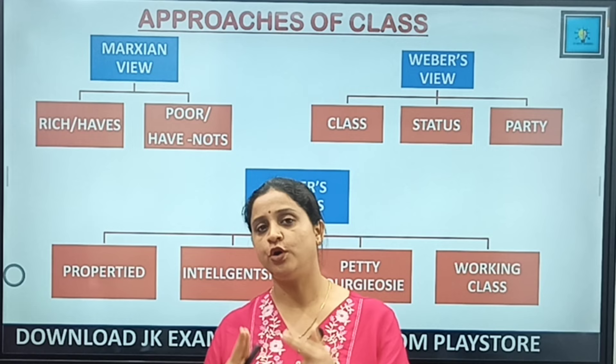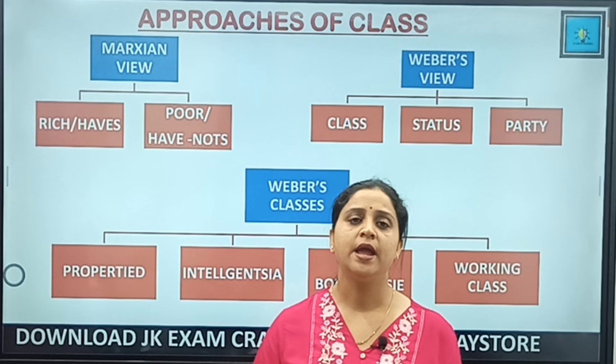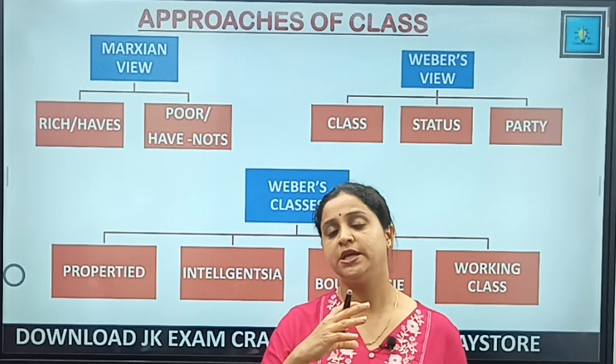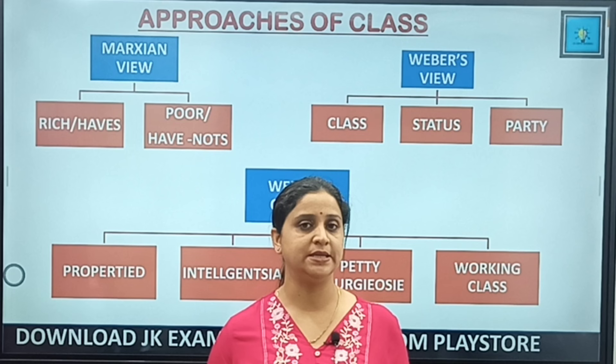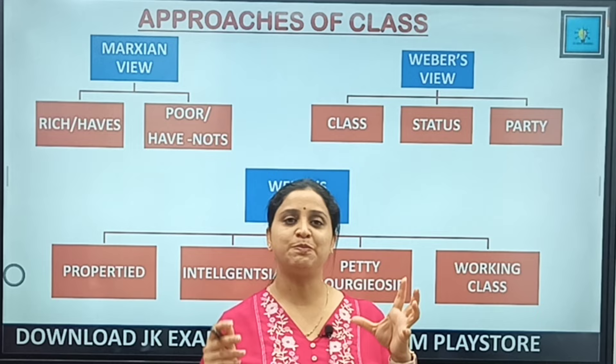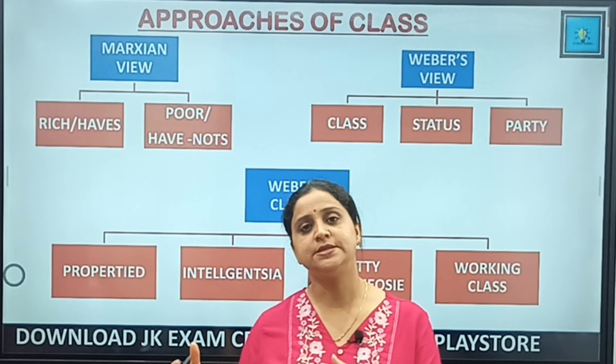Those who own the industries are the rich, the bourgeoisie — the haves. They have power, money, and social dominance. According to Karl Marx, there are only two classes in society: haves and have-nots, rich and poor, bourgeoisie and proletariat. Members of a class share the similar relationship to the forces of production.